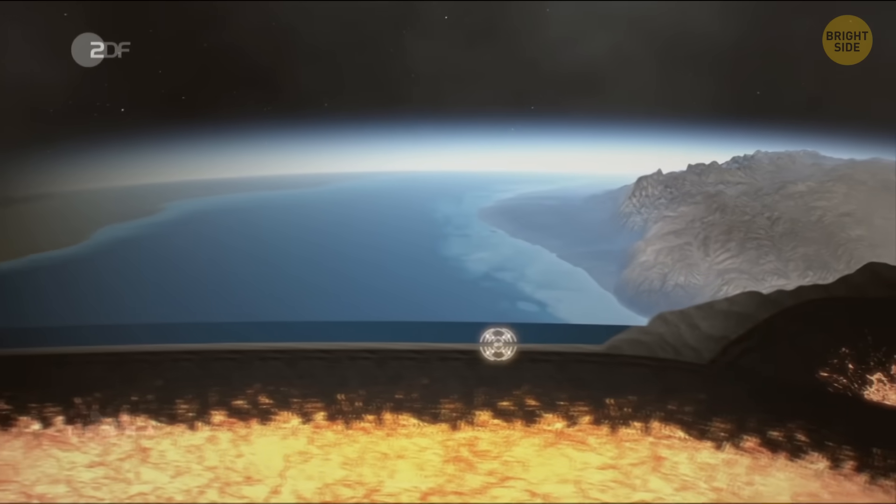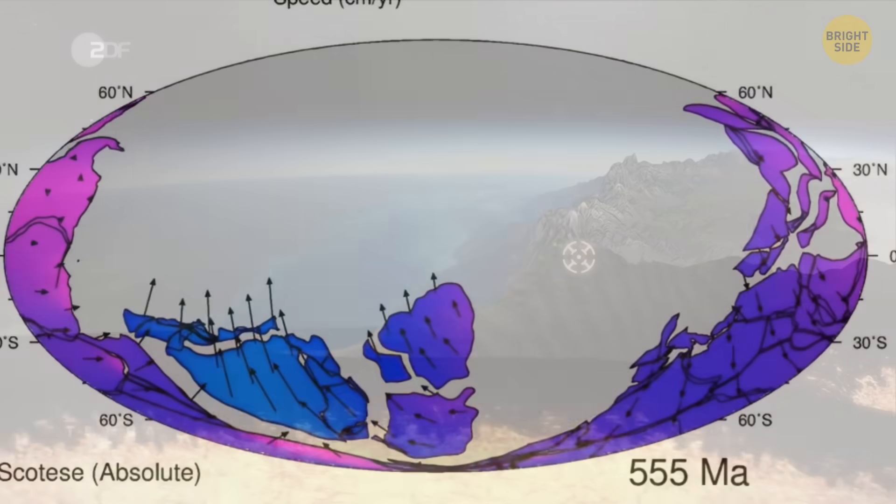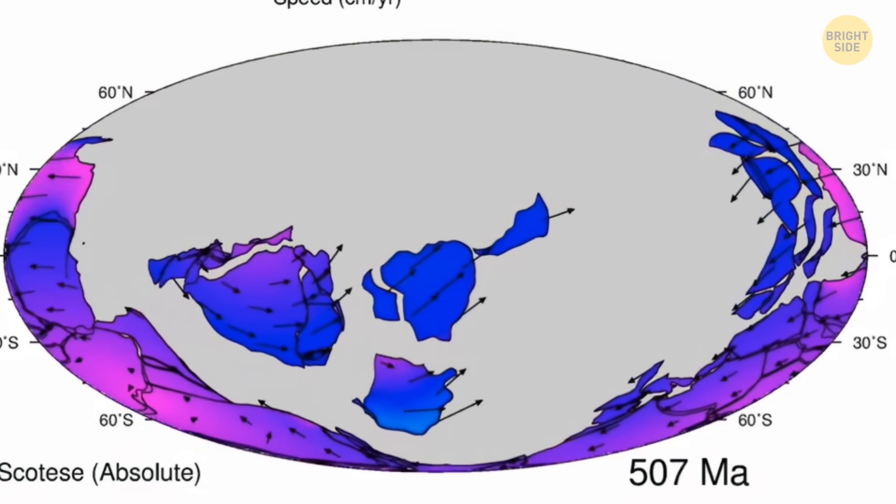Continents were moving, splitting apart, and coming back together. Two massive supercontinents, Nuna and later Rodinia, formed and broke up during this time.